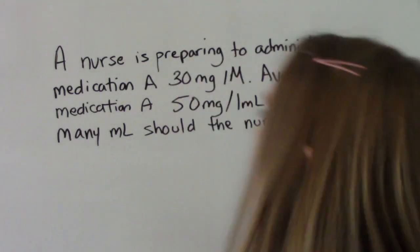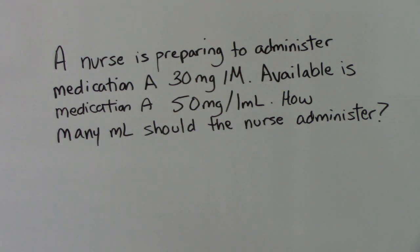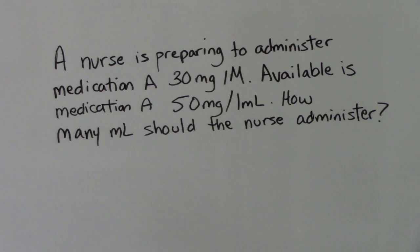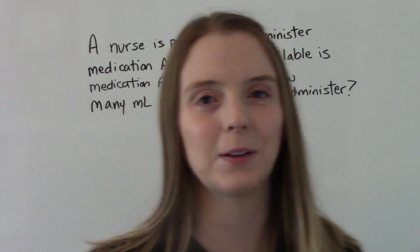Question number 4. A nurse is preparing to administer medication A, 30 mg IM. Available is medication A, 50 mg per 1 mL. How many mLs should the nurse administer? Take a second and pause it. Now let's work it out together.